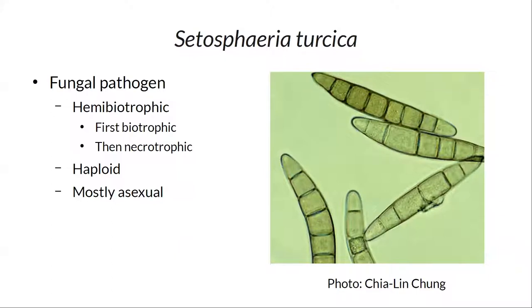The causal agent is the fungus Cetospheria tercica. The really critical things about its biology: first and foremost, it's hemibiotropic — it starts as a biotroph feeding off living maize cells and essentially trying to avoid detection. Then it switches into a necrotrophic phase, in which it kills the host tissue and lives off that dead tissue. Those are the necrotic lesions you saw before.